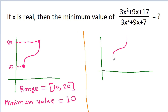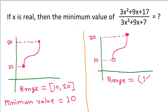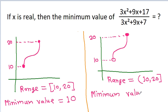Now if the range is the open interval from 10 to 20, then what will be the minimum value in this case? In this case, we cannot find any fixed minimum value, and hence we say that the minimum value does not exist.